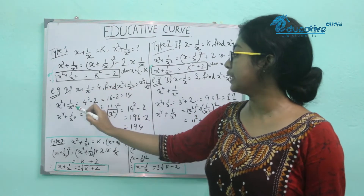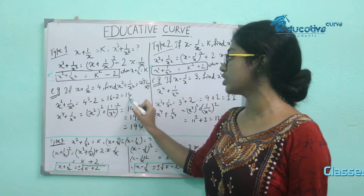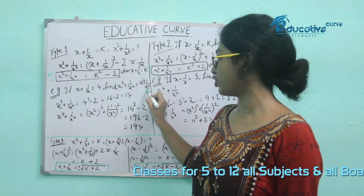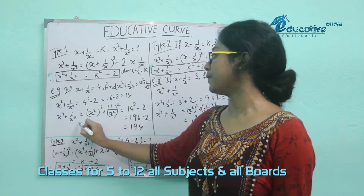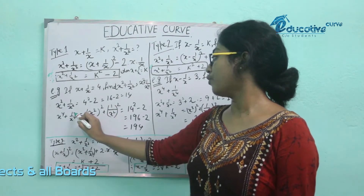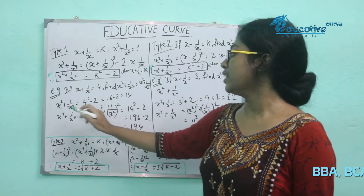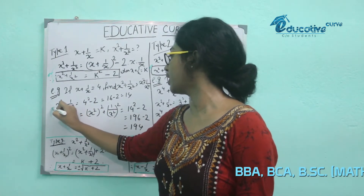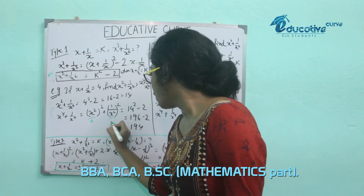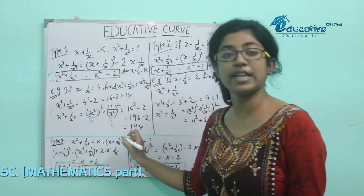For an example: x squared plus 1 by x squared is equal to 4. x squared is equal to... x squared plus 1 by x squared is equal to 4.